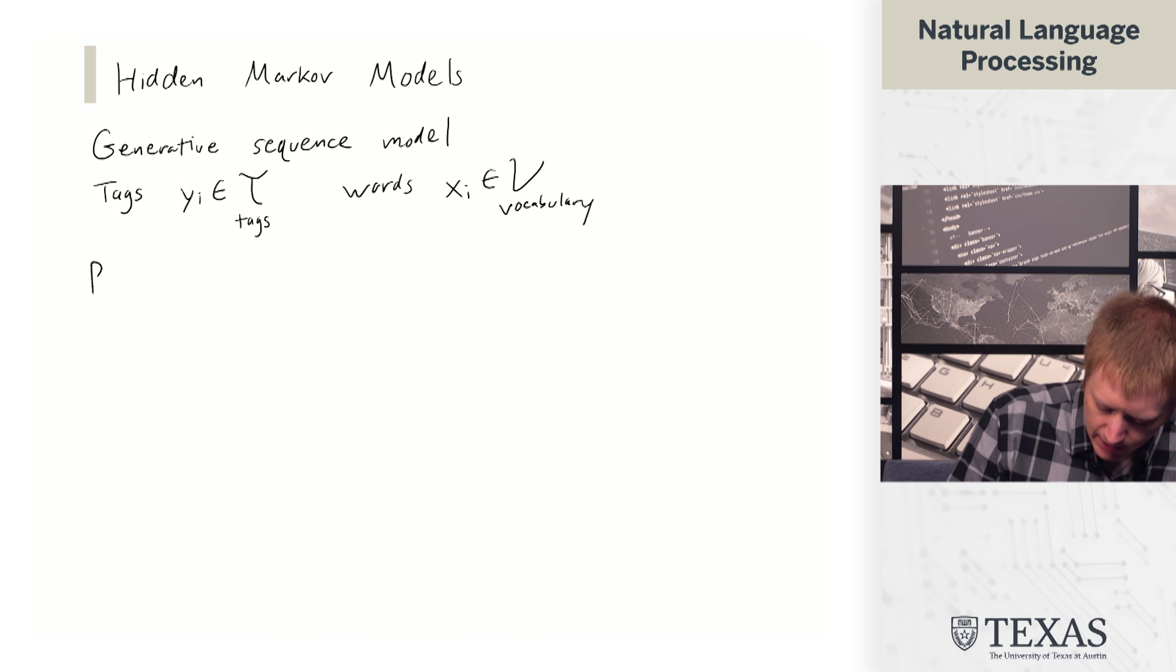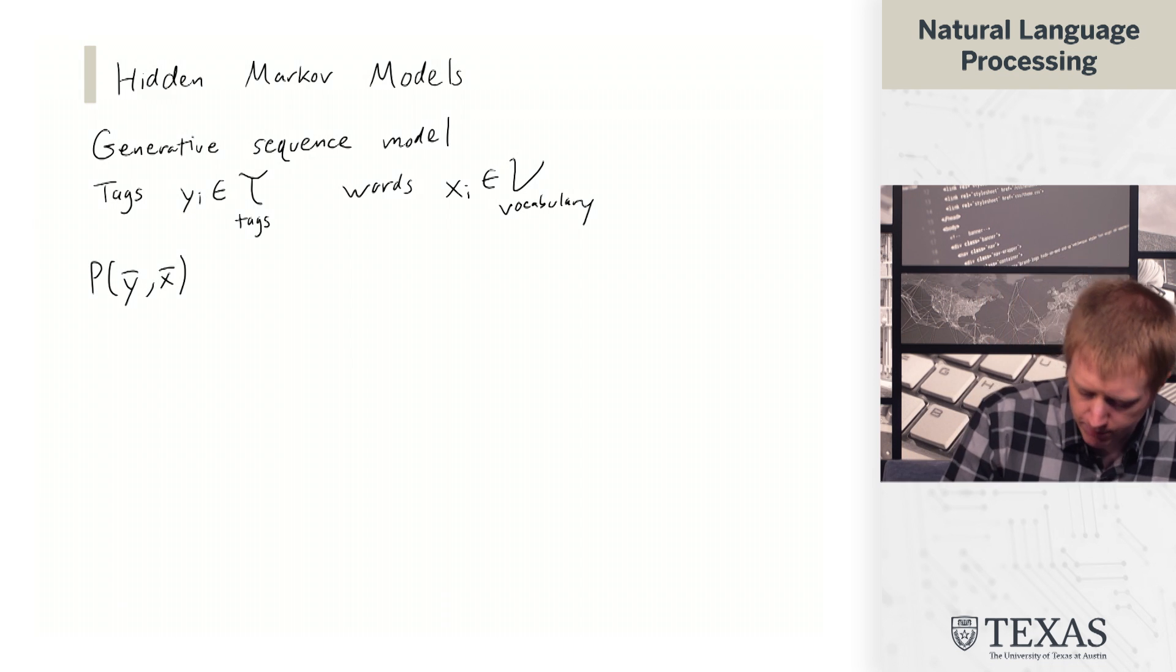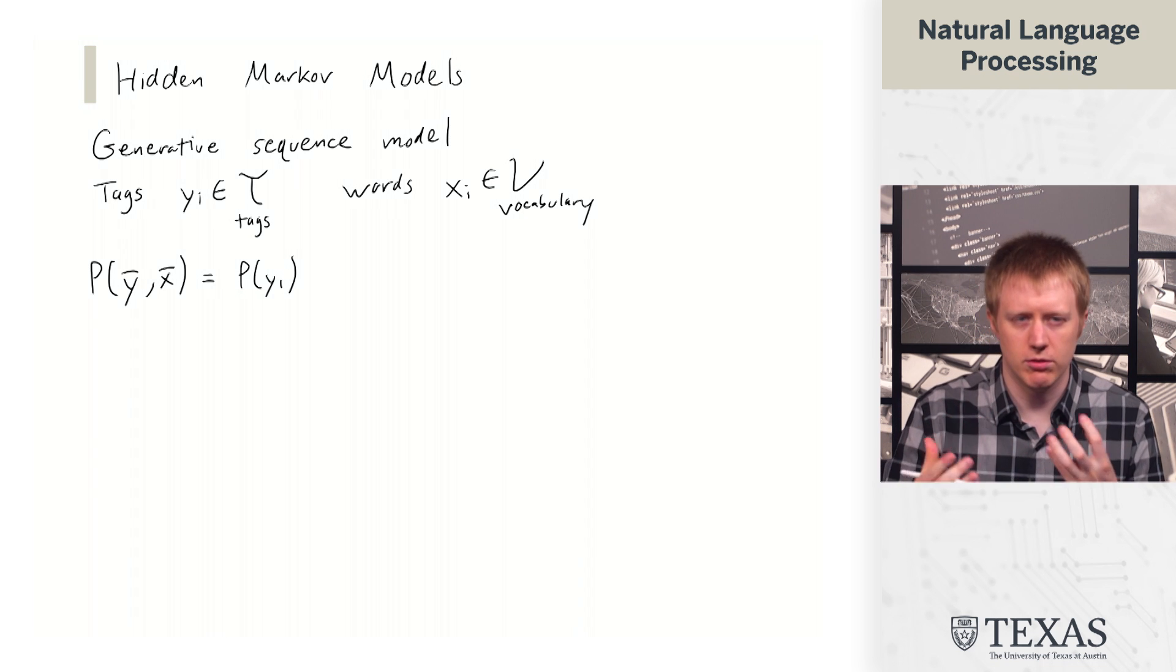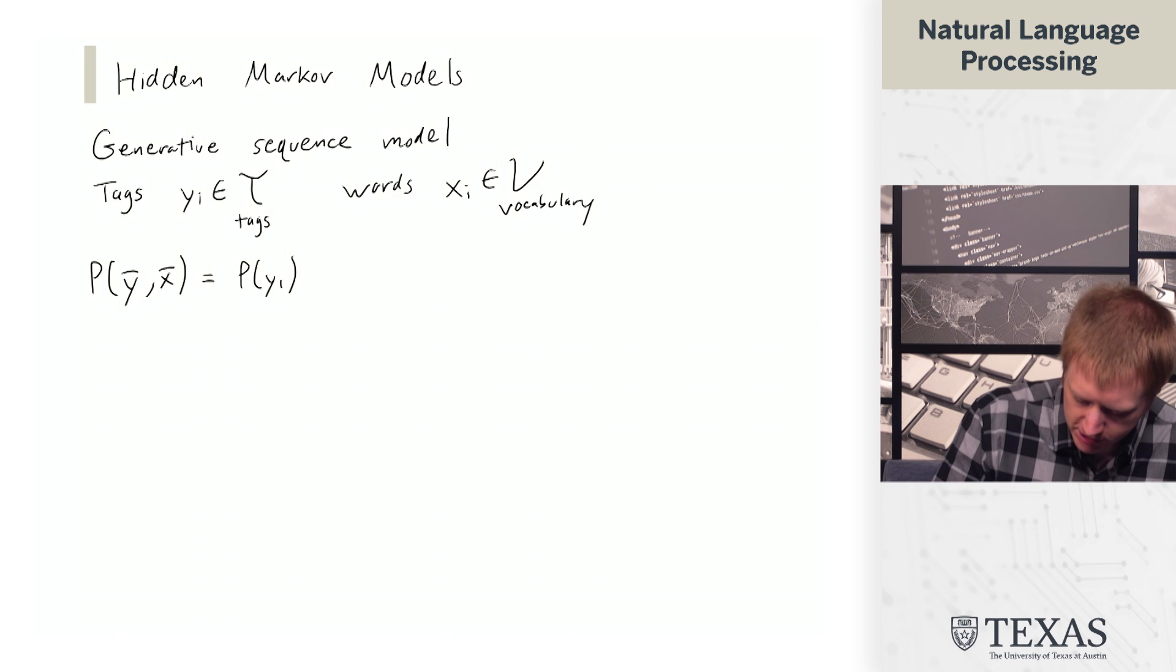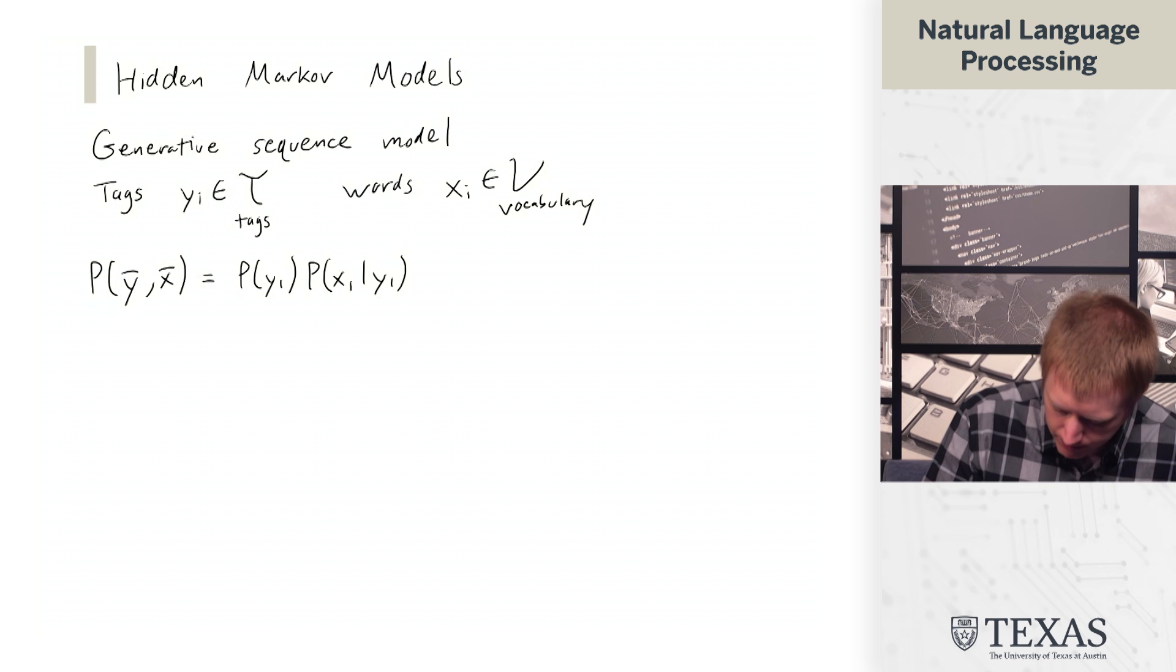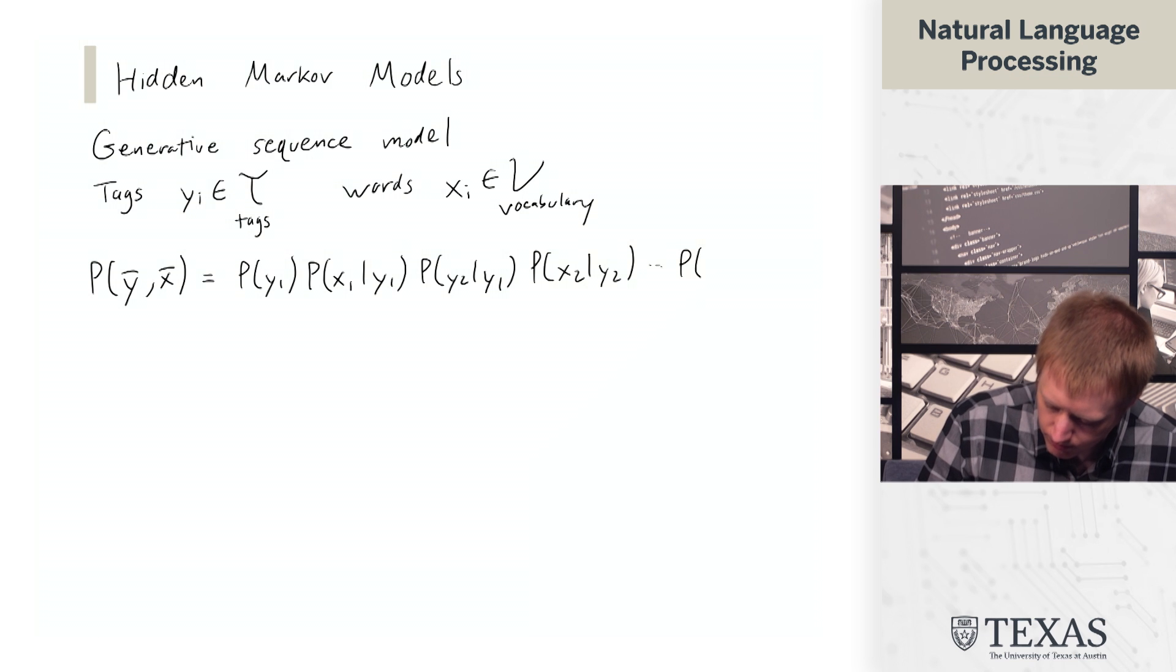All right. So the definition of a hidden Markov model is the following. Well, this is kind of one way. There are a couple of slight things that might differ between definitions, but this is basically the standard form of these. Okay, so what's going on here?